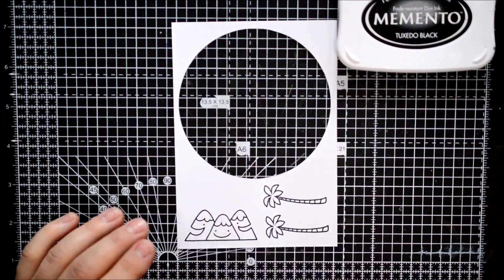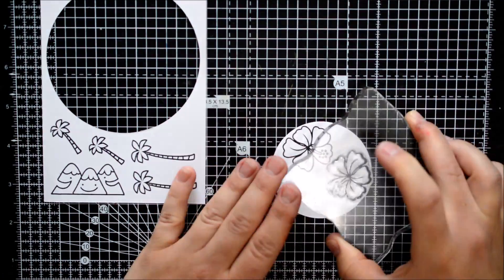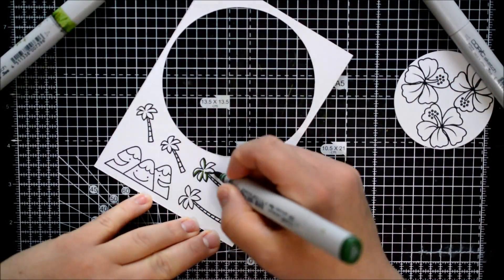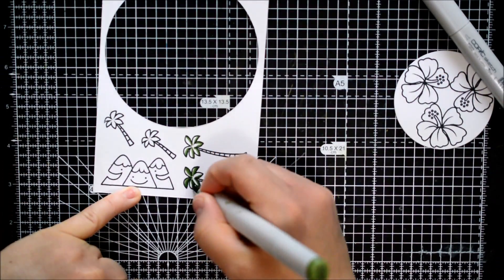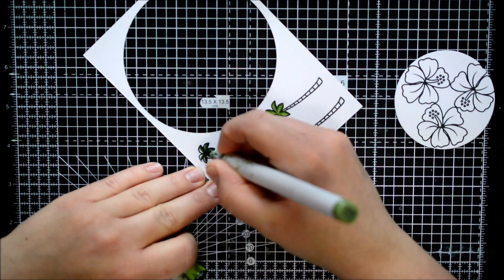Then I will start stamping my images with some Memento Tuxedo Black which is Copic resistant. I'm going to do some simple Copic coloring. I used two or three different colors. It's quite straightforward and I think it works quite well.